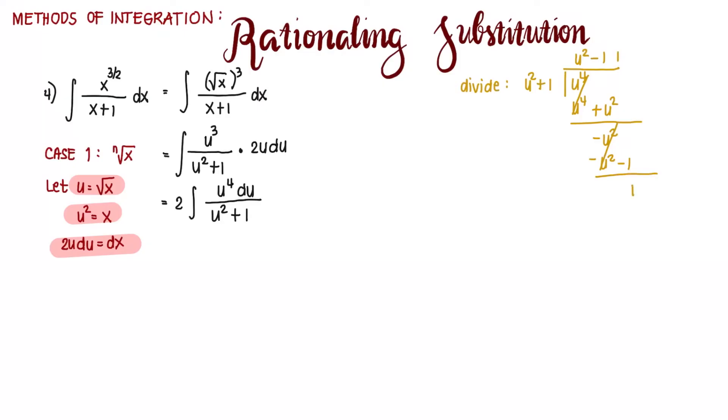The remainder is 1, so this is plus 1 over u squared plus 1. We rewrite our integral as 2 integral of u squared minus 1 plus 1 over u squared plus 1 du.